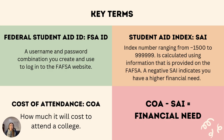Other key terms include the FSA ID, or federal student aid ID. This is the username and password combination that students and families create to log into the FAFSA website. The student aid index, or SAI, is the number calculated from the data that a family inputs on the FAFSA application and indicates a family's level of financial need. A lower number will indicate a higher level of need, and numbers will range between negative 1,500 and up to 999,999.